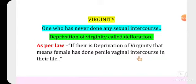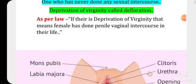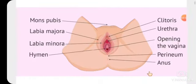Before marriage, if the male wants to prove the virginity of the female — whether penile-vaginal intercourse occurred or not — he examines whether the hymen is intact. If the hymen is intact, the female is considered a virgin. If the hymen is torn, that is called defloration. As per law, defloration means the female has had penile-vaginal intercourse, which can lead to nullity of marriage or divorce.